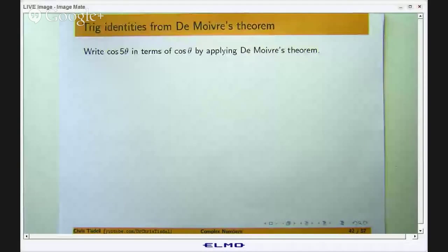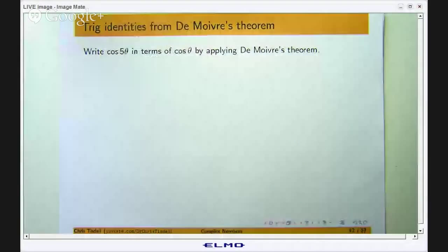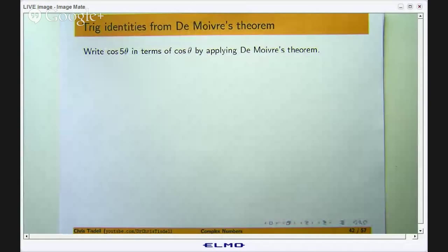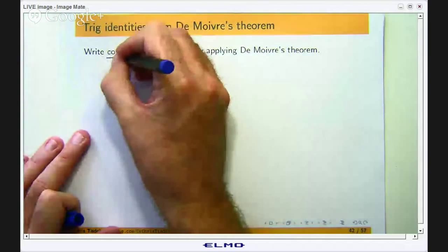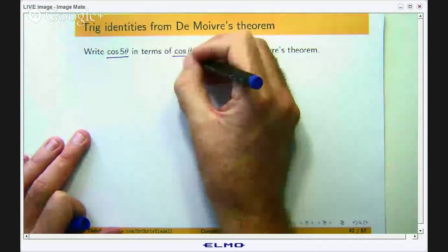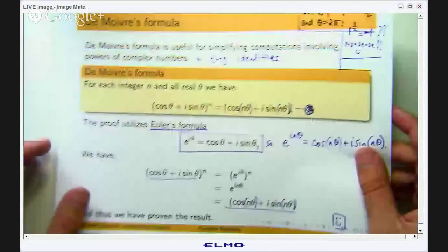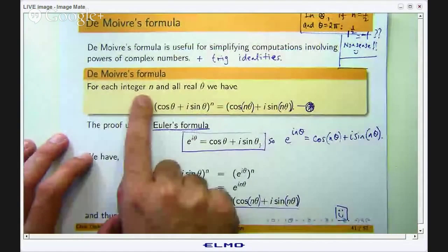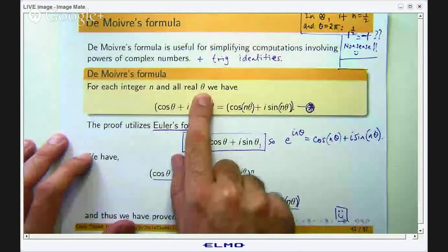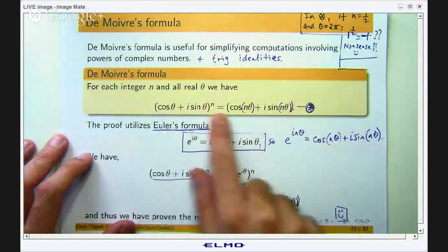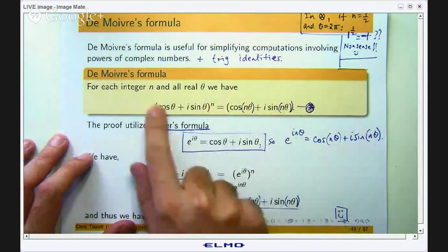Okay, so here is the problem. You are asked to write cos 5θ in terms of cos θ by applying de Moivre's theorem or de Moivre's formula. Let us just remind ourselves what that is. For each integer n and all real θ we have the following relationship.